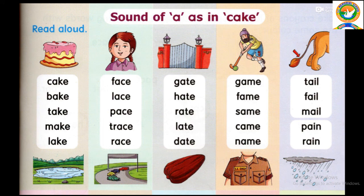Dekho, sirf ek letter change ho raha hai. Tail mein T hai, Fail mein F hai, Mail mein M hai. Usi tarah se Pain mein P, R-A-I-N Rain. Alright, isko jodke 3 baar padho. Yad kar lena, next baar yeh nahi padhayenge, aage padhayenge.